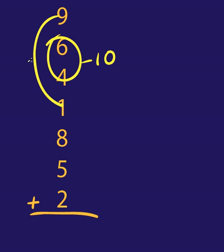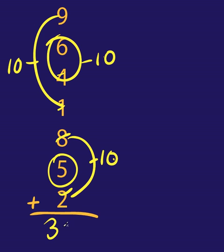9 and 1, that's compatible. Bam, that's a 10. Hey, 8 and 2, that's compatible. 10. So we've gotten rid of all these. 10, 20, 30, and there's just 5 left, so the answer would be 35.